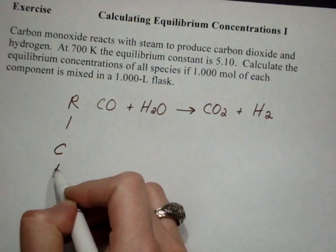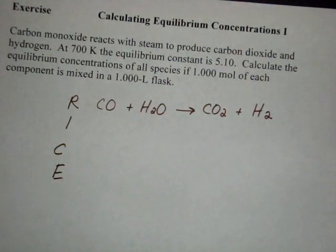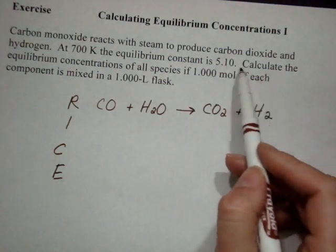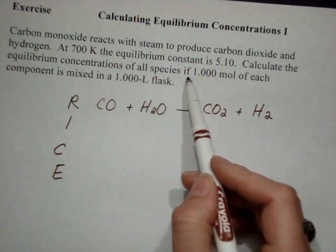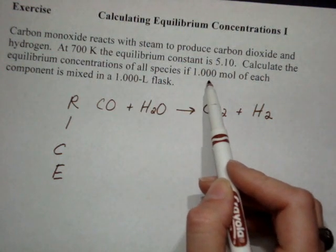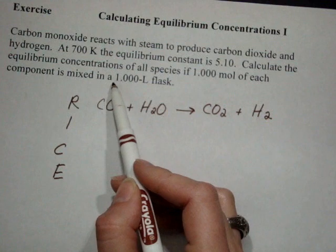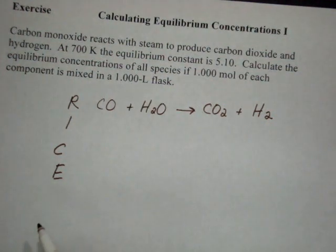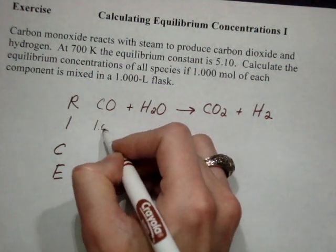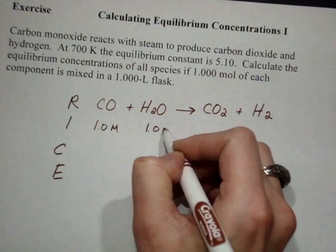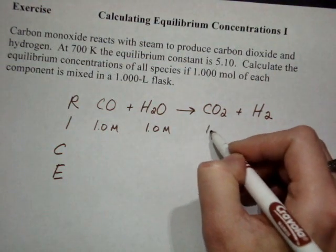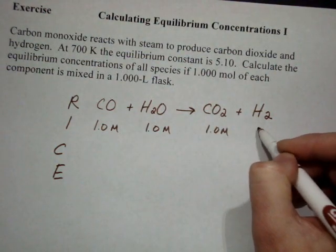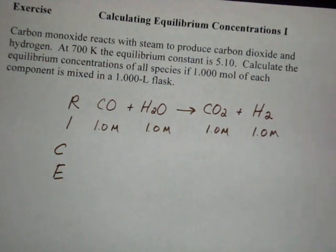I'm going to put my RICE here on the side. My initial concentrations - it says calculate equilibrium concentrations of all species if one mole of each component is mixed in a one liter flask. So that means I have 1.0 molar CO, 1.0 molar H2O, 1.0 molar CO2, and 1.0 molar H2.